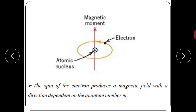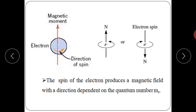For the magnetic moment: the spin of the electron produces a magnetic field whose direction depends on the quantum number m_l. The atomic nucleus carries positive charge and electrons flow in the anti-clockwise direction around the nucleus. The direction of electron spin — clockwise or anti-clockwise — determines the direction of the magnetic moment.